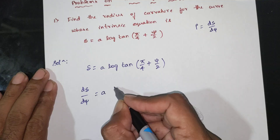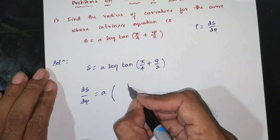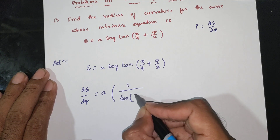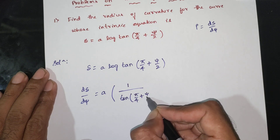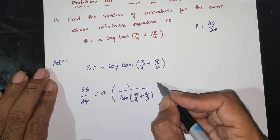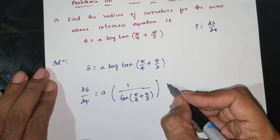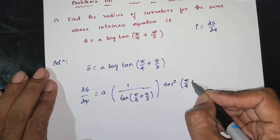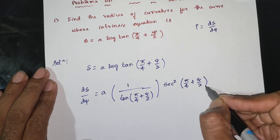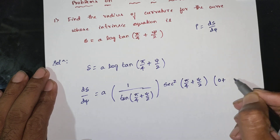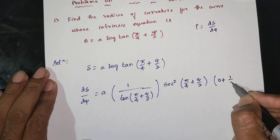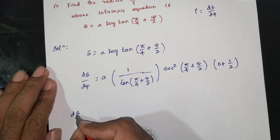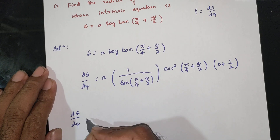Since a is a constant, we differentiate log(tan(π/4 + ψ/2)). The derivative of the log term gives 1/tan(π/4 + ψ/2), and the derivative of π/4 + ψ/2 with respect to ψ is 1/2. So ds/dψ is equal to...